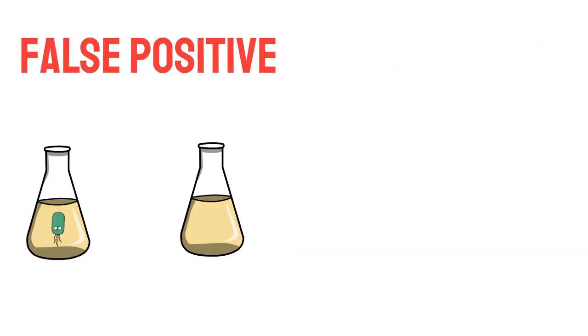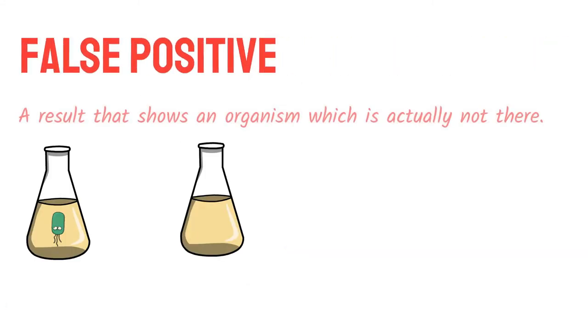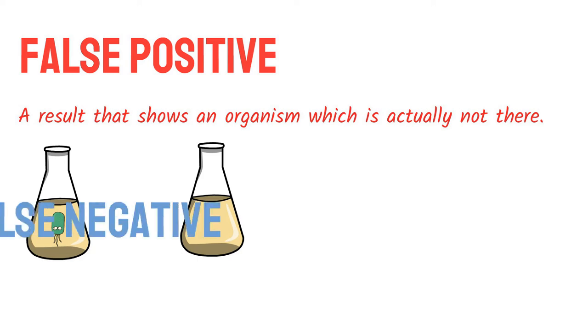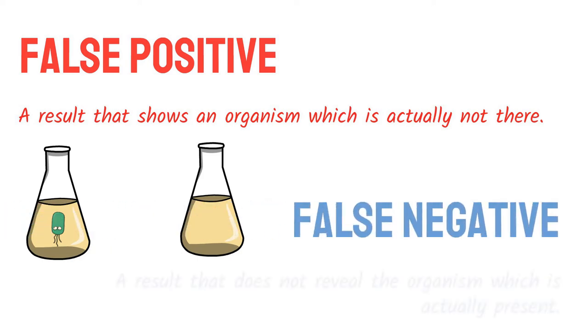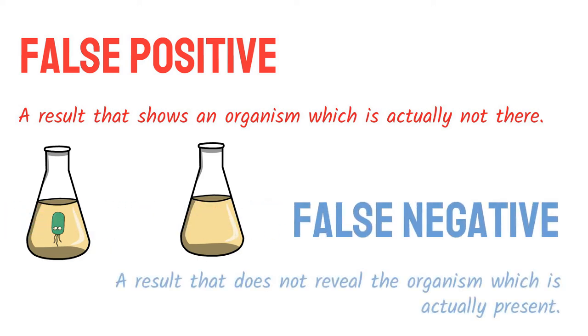False positive is a result that shows an organism which is actually not there. False negative is a result that does not reveal an organism which is actually present.